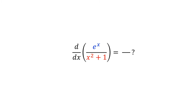For many people, their first instinct is to compute the derivative of the numerator and denominator. That is, they would say the derivative of e to the x is just e to the x, and the derivative of x squared plus 1 is 2x.